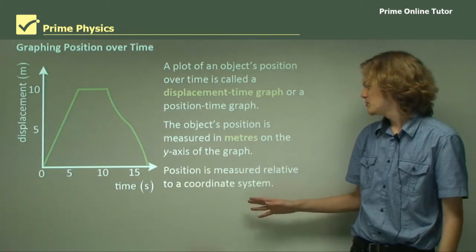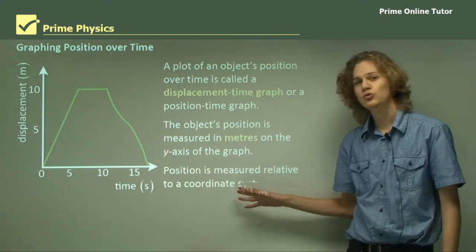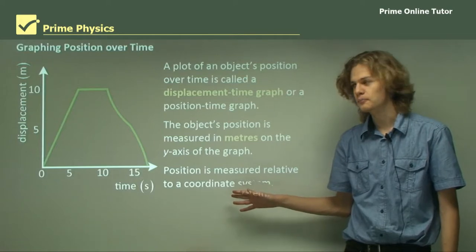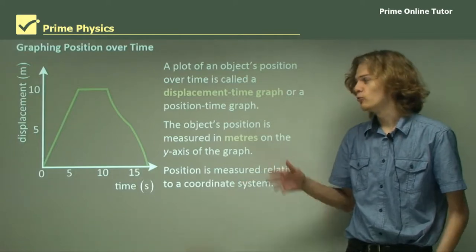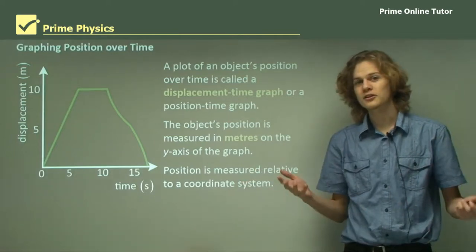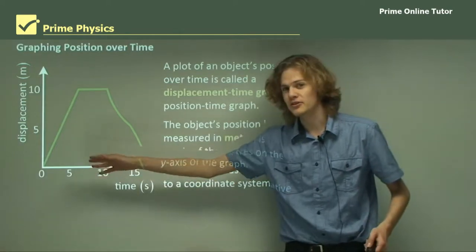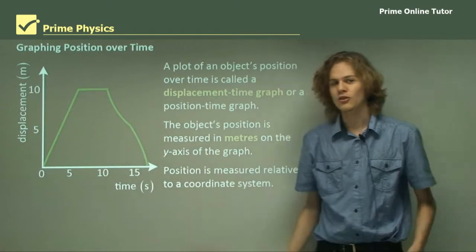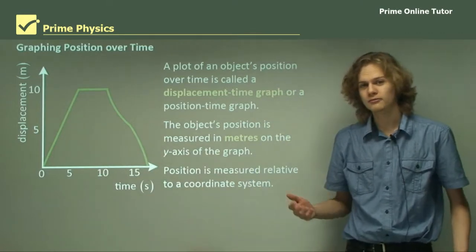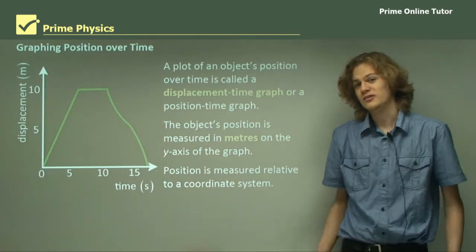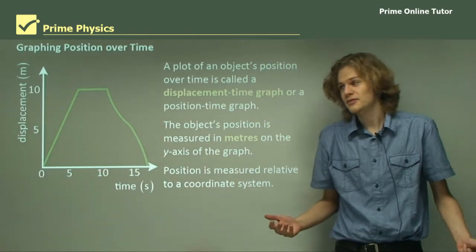Now, position is measured relative to a coordinate system. So whenever we're graphing displacement, we have to know where zero is at the bottom of the graph. Otherwise, it won't really make sense.